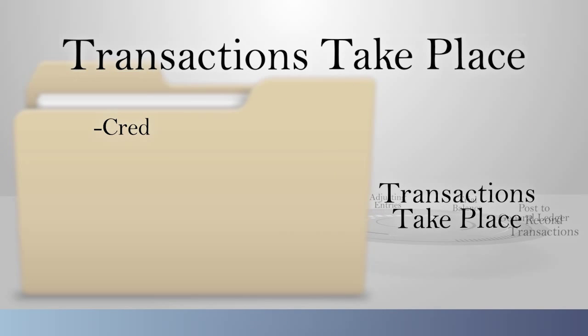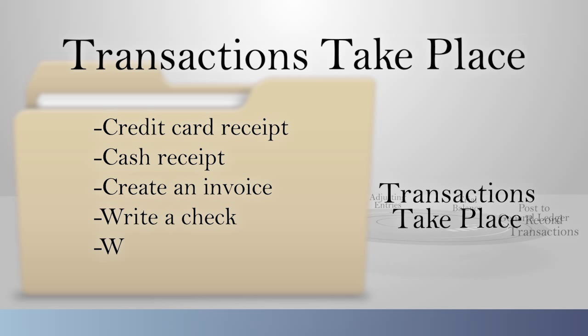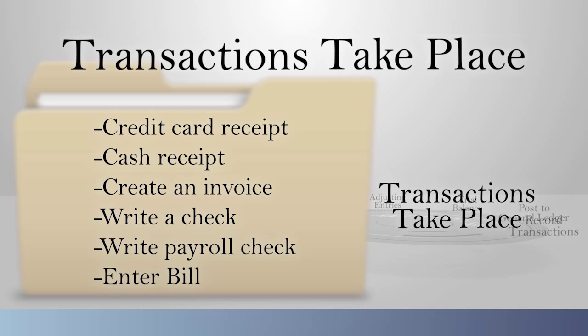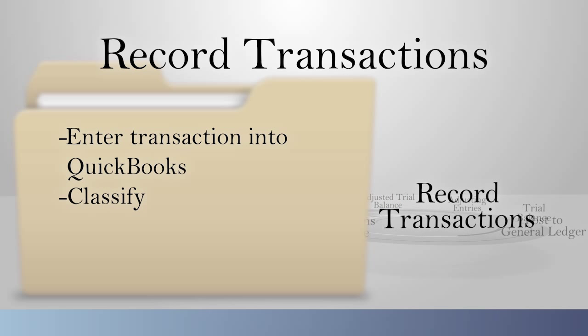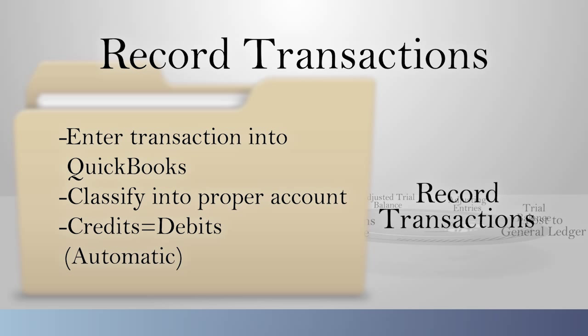Let's take a look at this in more detail. Transactions taking place includes getting a credit card receipt or cash receipt — you paid for parking, you create an invoice to a customer, you write a check, payroll checks, or you receive a bill from a vendor. Then you take these original transactions and enter them into QuickBooks, assigning them to an account — whether it's an income account, expense account, cost account, or a balance sheet account.